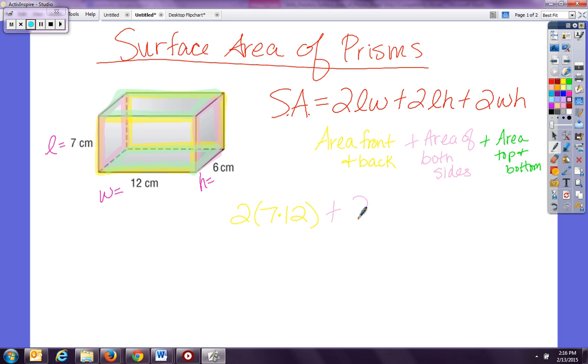Then I have two times my height and my length, which is the area of my ends—length and height—so my length is seven and six. And then now I have my area of the top and bottom, which is width times height, so two times width, which is 12, times the height, which is 6.